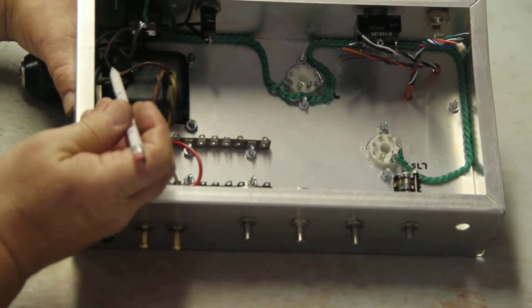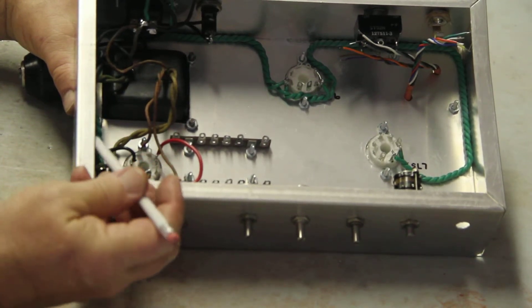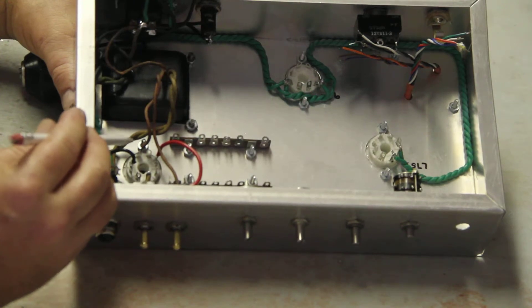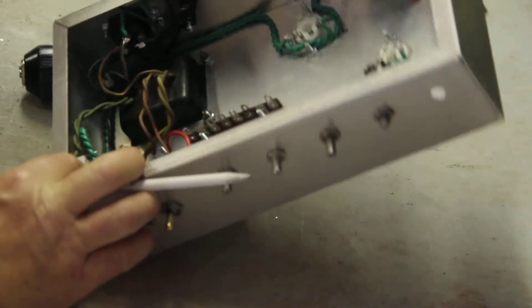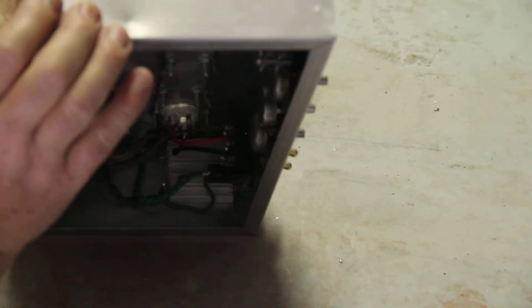This is something you're going to be familiar with once you get your power transformer. The yellow wires are the 5-volt filament wires, and I wanted you to notice that.